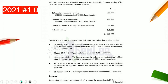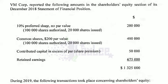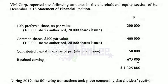We begin by looking at the question. VMCorp reported the following amounts in the Shareholders' Equity Section of its December 2018 Statement of Financial Position: 10% preferred shares, no par value, 100,000 authorized shares, 20,000 shares sold, value $200,000. Common shares, $200 par value, 100,000 shares authorized, 20,000 shares sold, value $400,000. Contributed capital in excess of par — the share premium, otherwise known as paid-in capital — is $50,000. Retained earnings is $675,000.